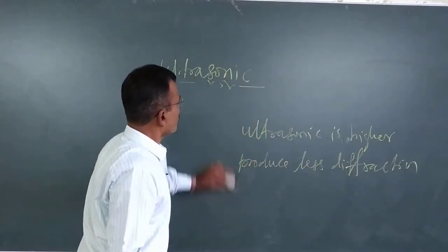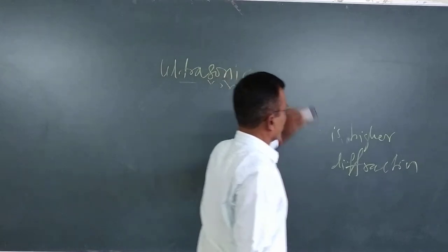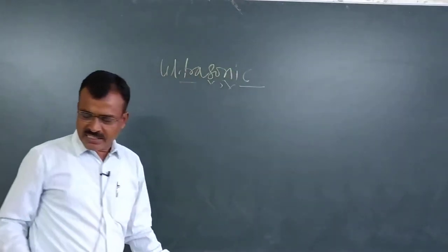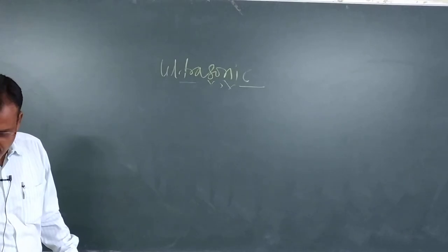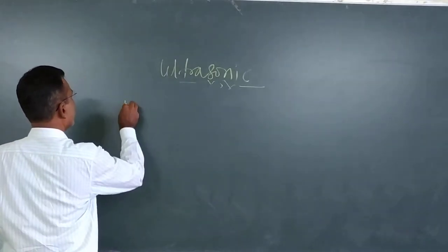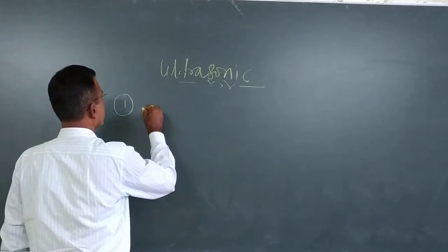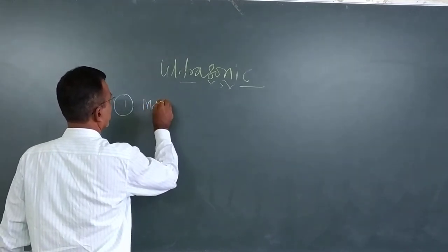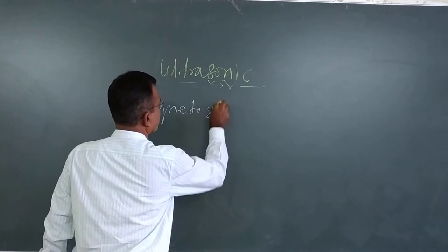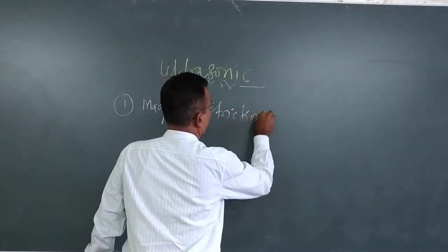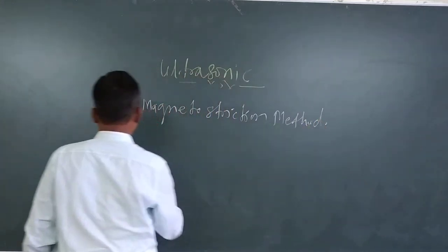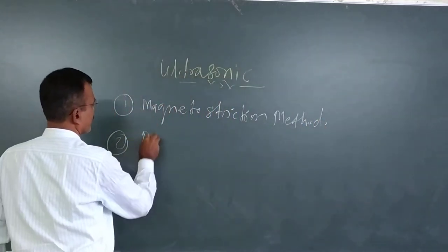Now we will see how to produce these ultrasonic waves. There are many methods for the production of ultrasonic waves, but we will see two in detail: first, the magnetostriction method, and second, the piezoelectric method.